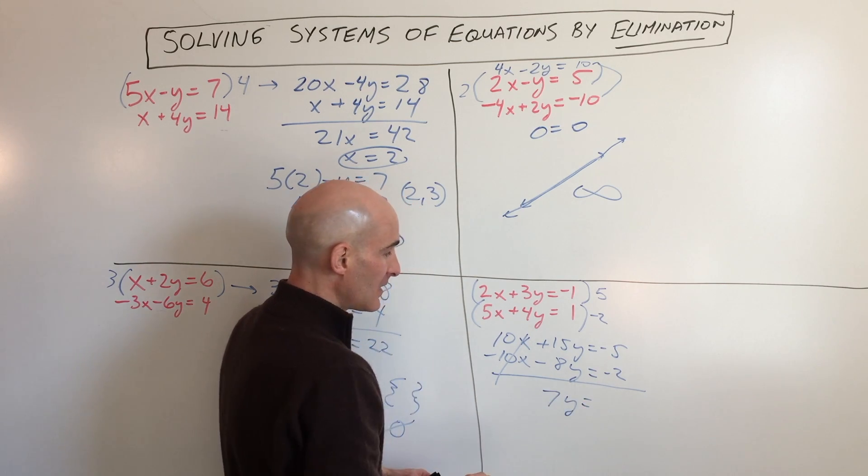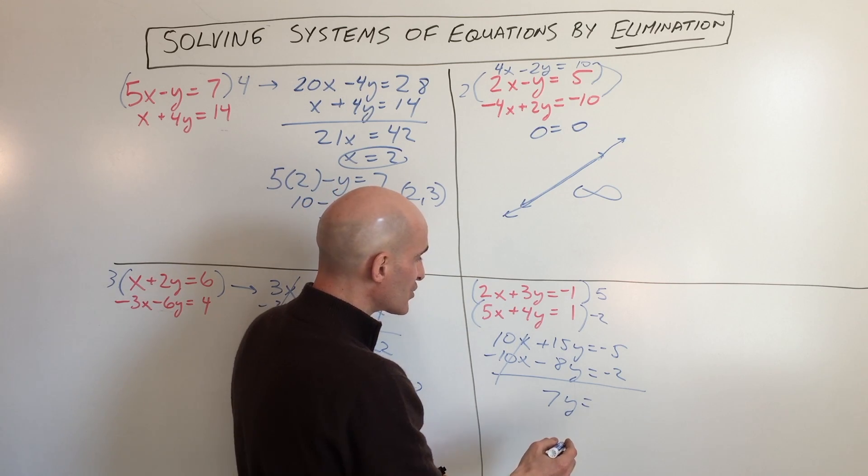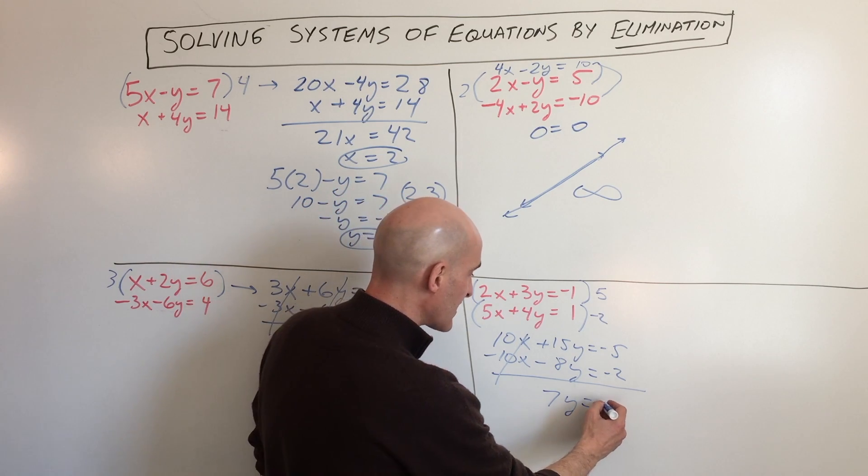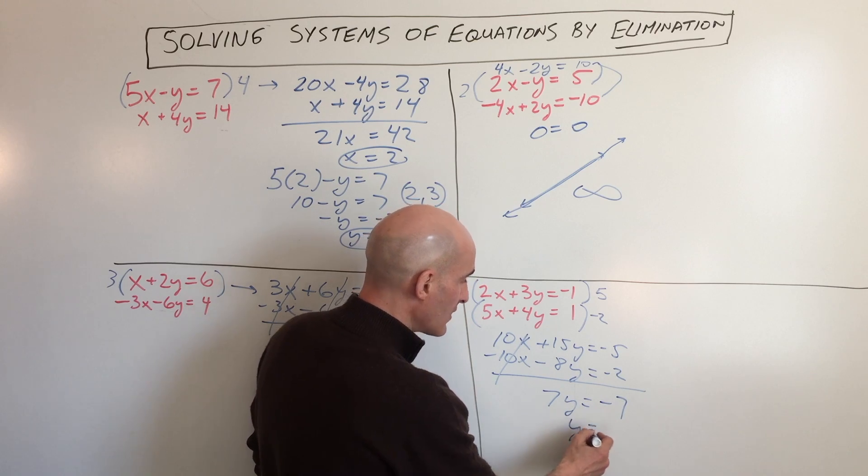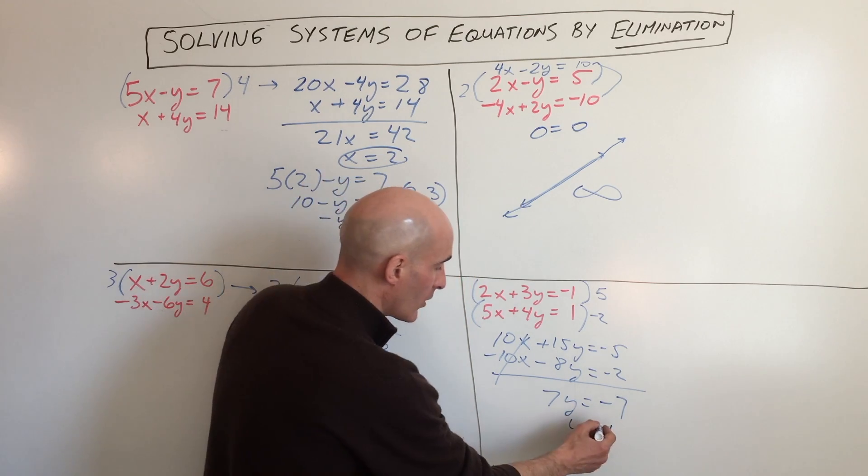We get 7y equals, just checking my math real quick to make sure I didn't make any mistakes. So that's negative 7 and y equals negative 1.